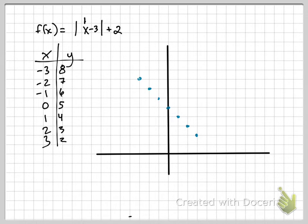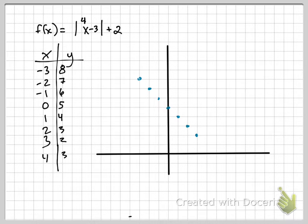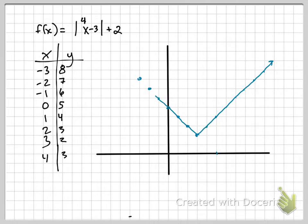Have I found my peak or valley yet? No. Better keep going. Plug in 3: 3 subtract 3 is 0, absolute value of 0 is 0, plus 2 is 2. Still in that line. Plug in 4: 4 subtract 3 is 1, absolute value of 1 is 1, plus 2 is 3. Uh-oh — it's going back up! If 4 gives 3, what do you think 5 will give? 4. You better keep going until you find your peak or valley.